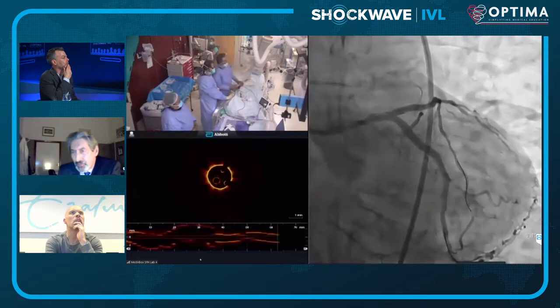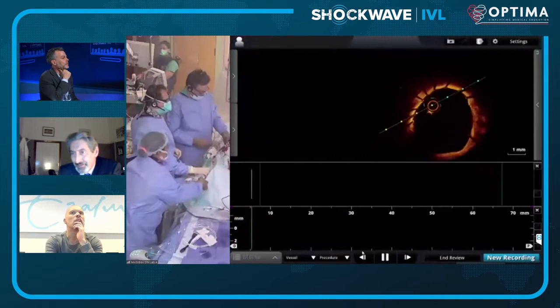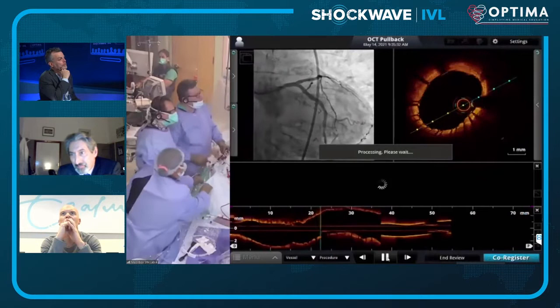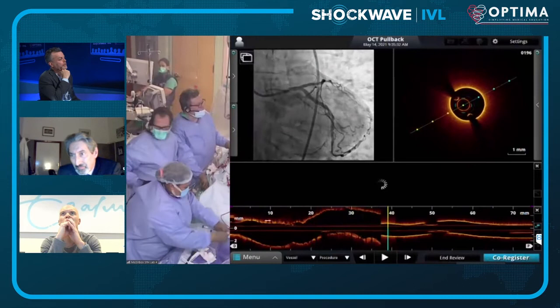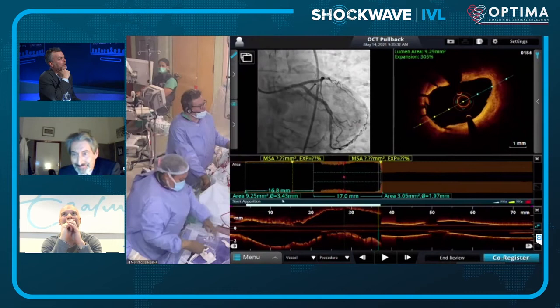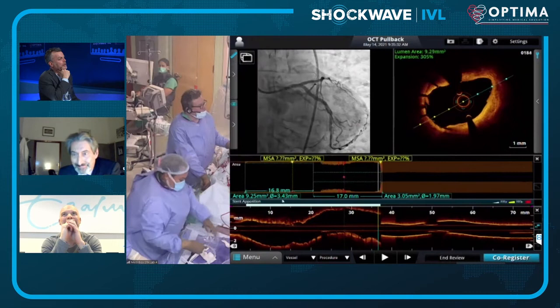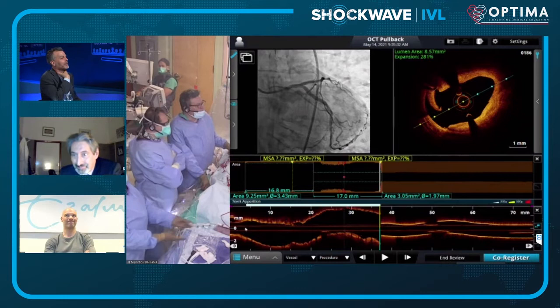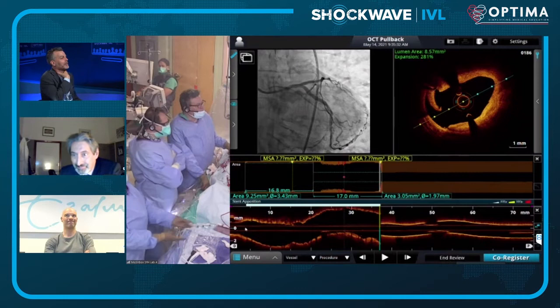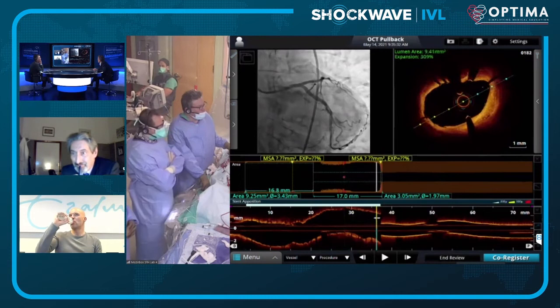A further OCT run is performed. You can see a beautiful lumen, and then examining the proximal edge and ostium, a dissection is visible — it goes to the media. There are nodding heads from the panel: they're a bit more lenient with a proximal dissection when a stent is in front of it since propagation is less likely, but if it goes to the media it needs to be covered.